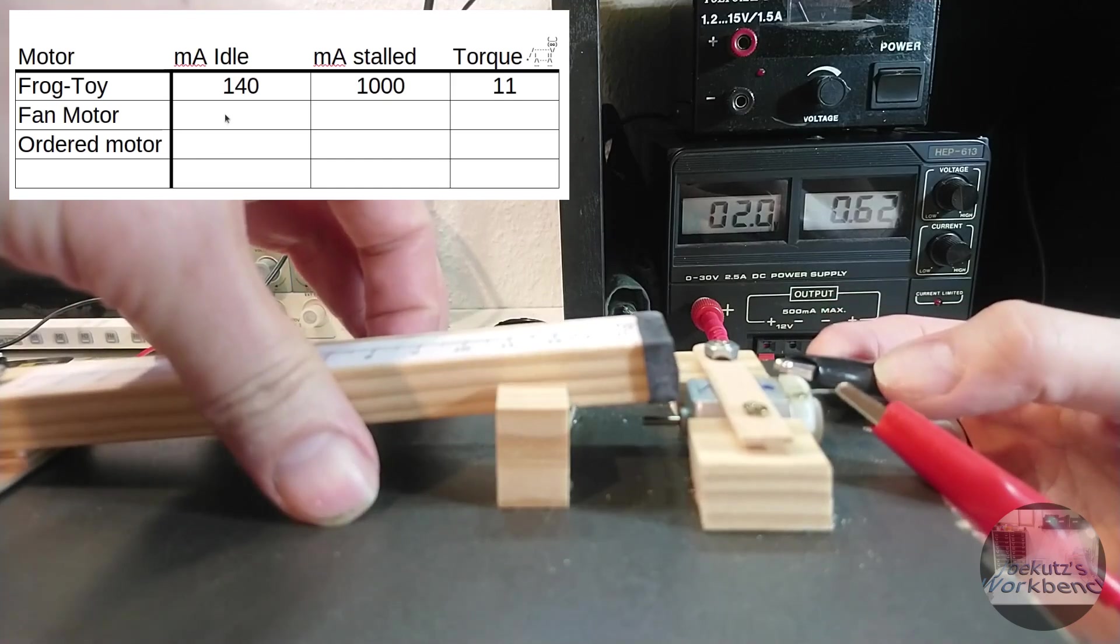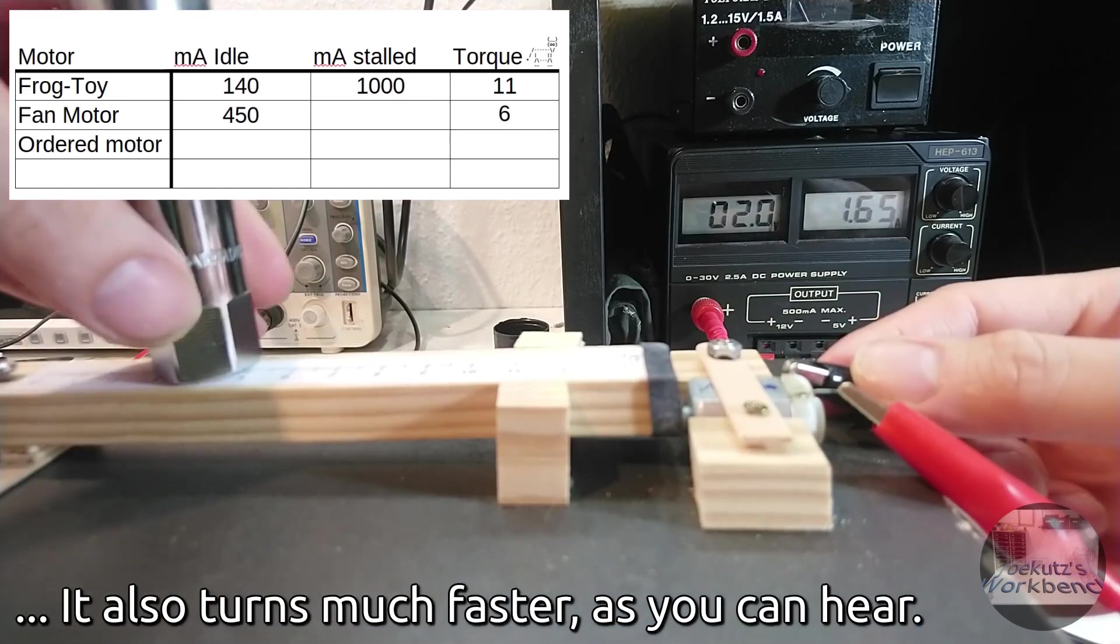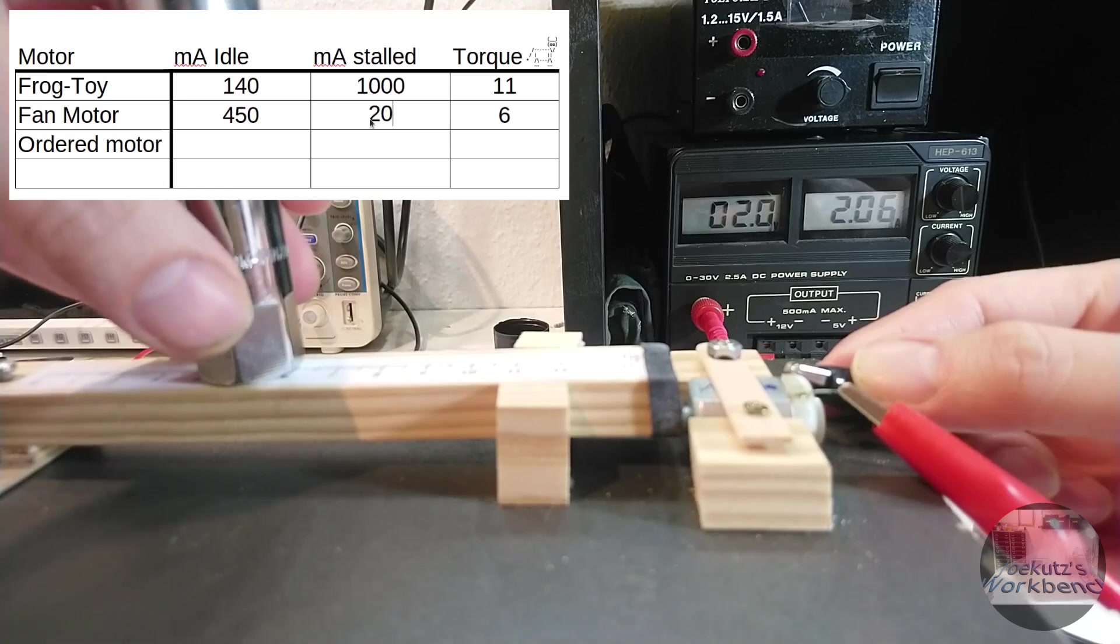In comparison, here is one of the fan motors. It needs 450 milliamps while idle and stalls at a much smaller load while drawing a whopping 2 amps.